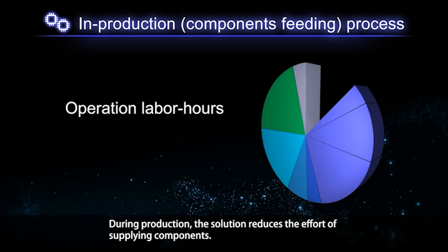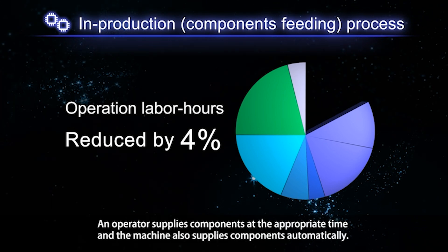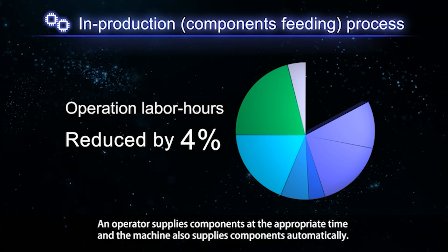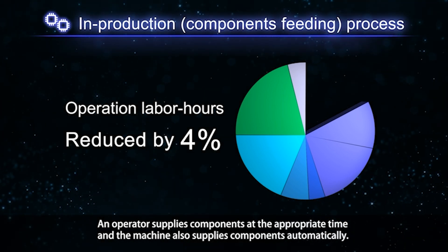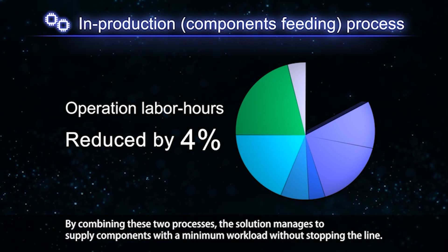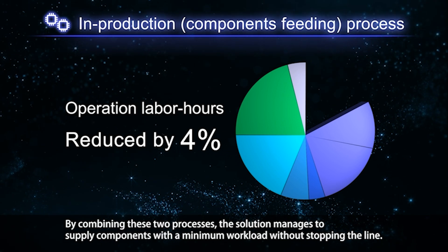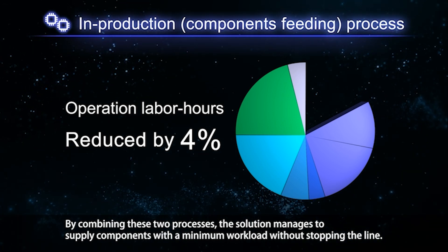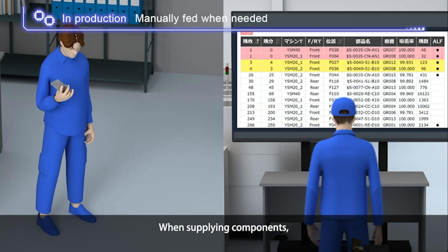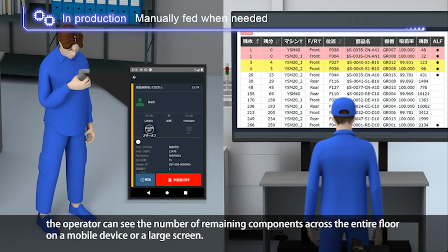During production, the solution reduces the effort of supplying components. An operator supplies components at the appropriate time and the machine also supplies components automatically. By combining these two processes, the solution manages to supply components with a minimum workload without stopping the line. When supplying components, the operator can see the number of remaining components across the entire floor on a mobile device or a large screen.